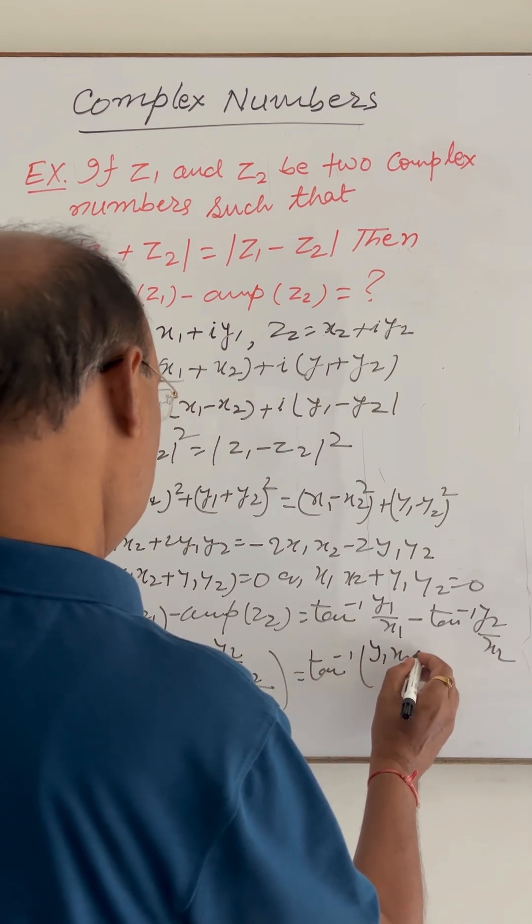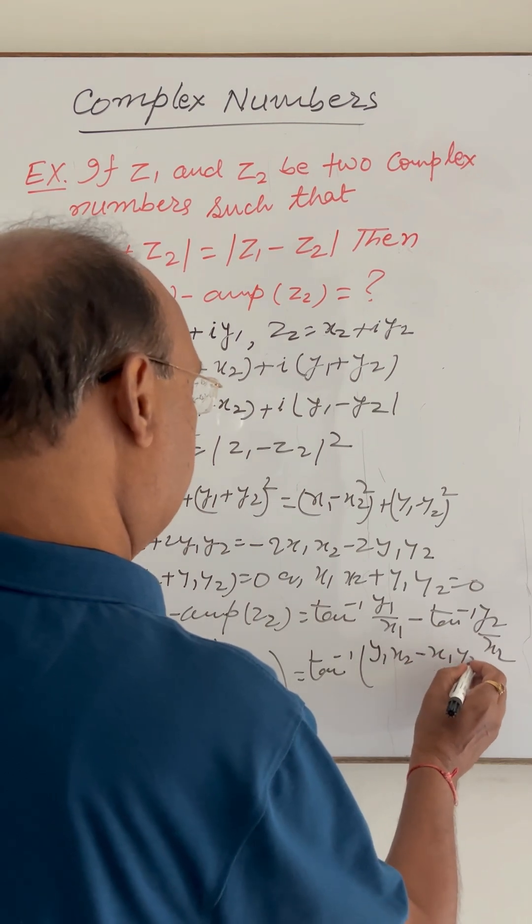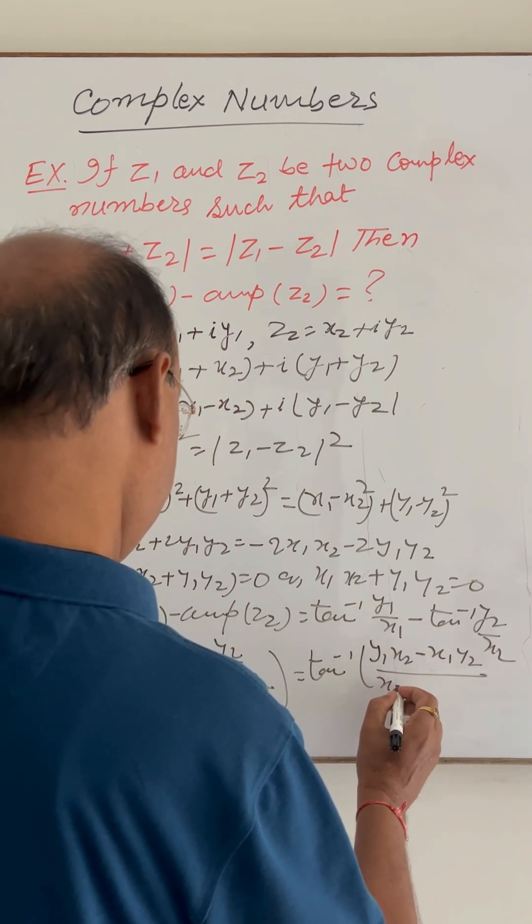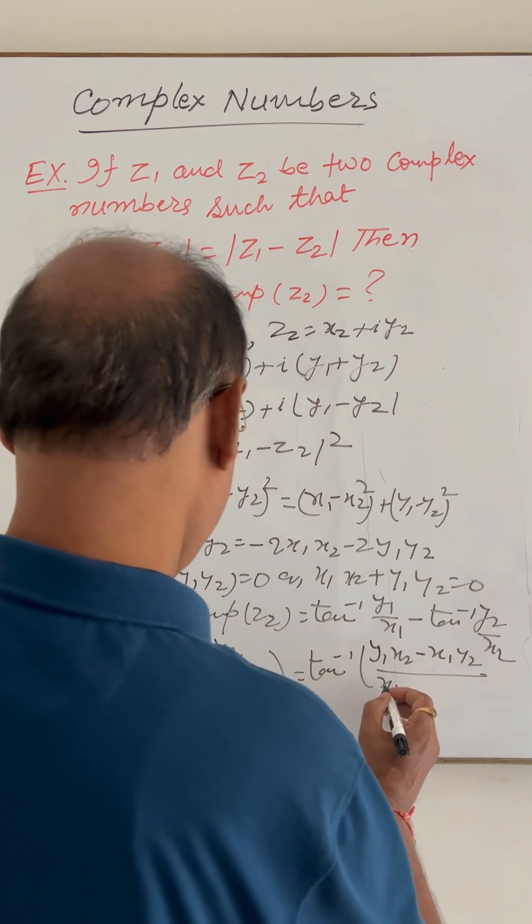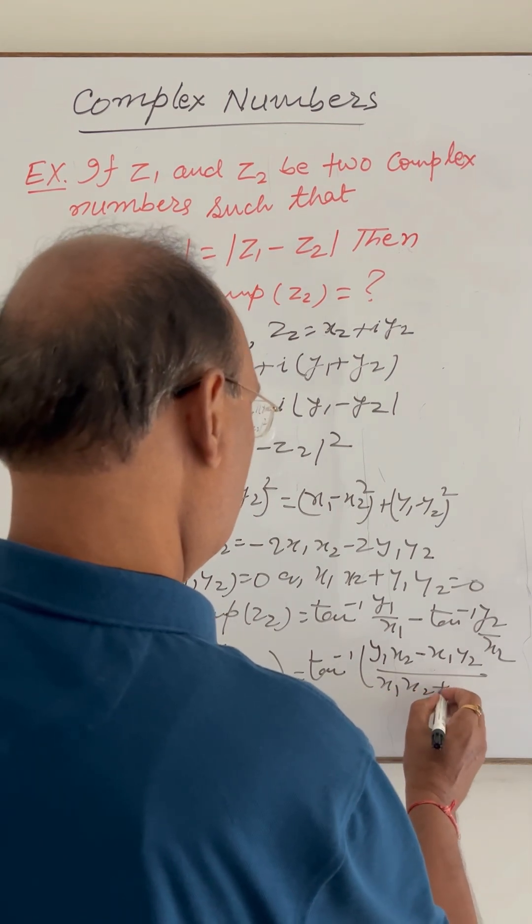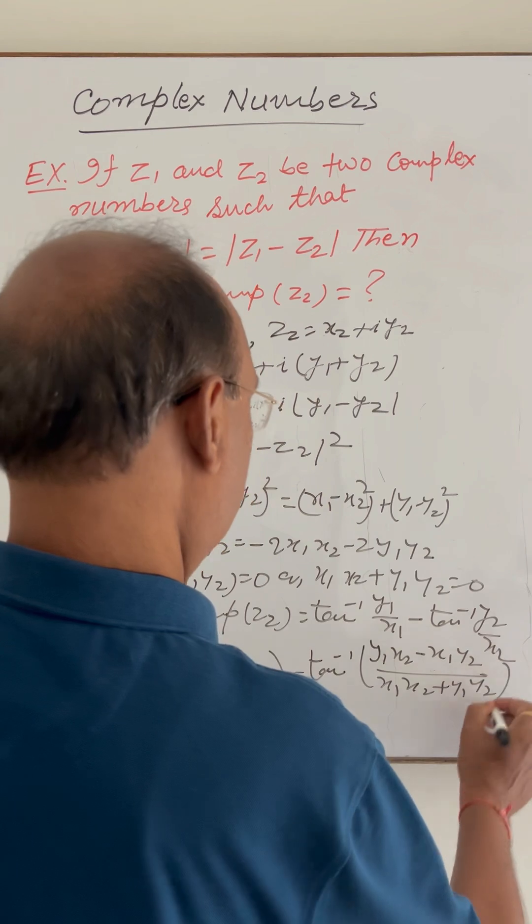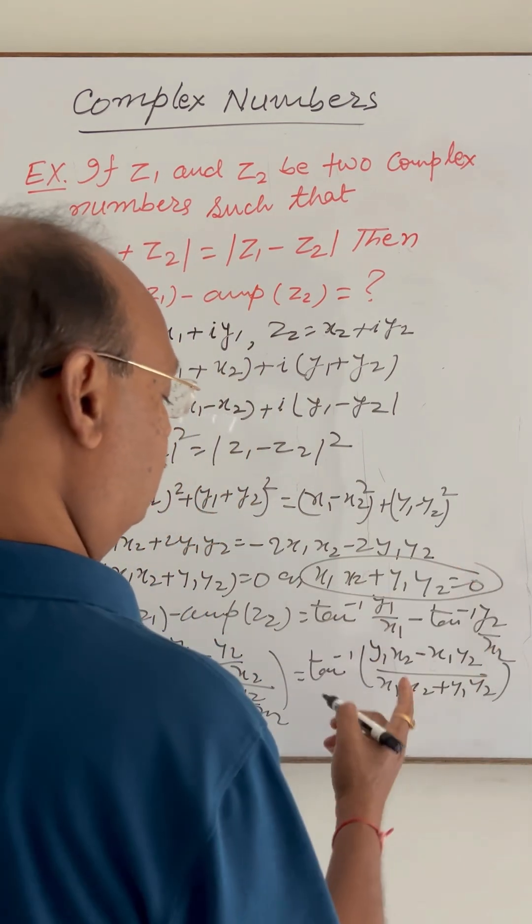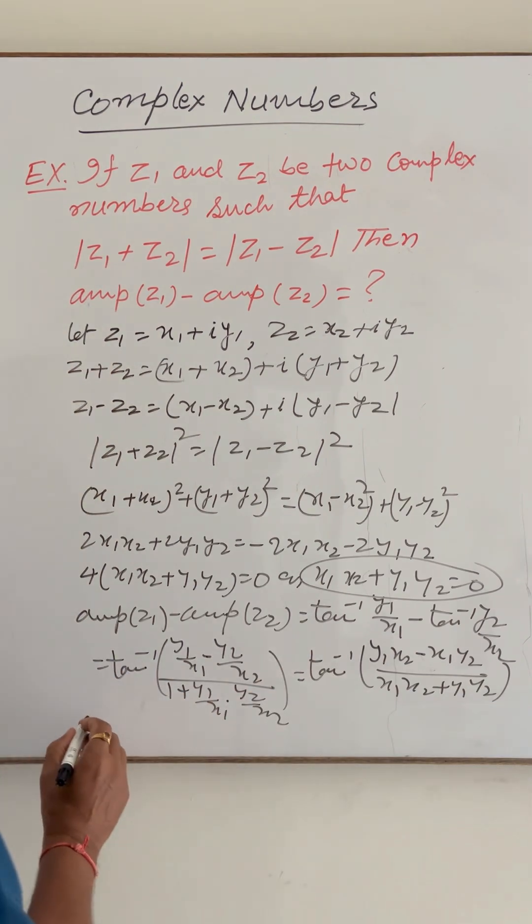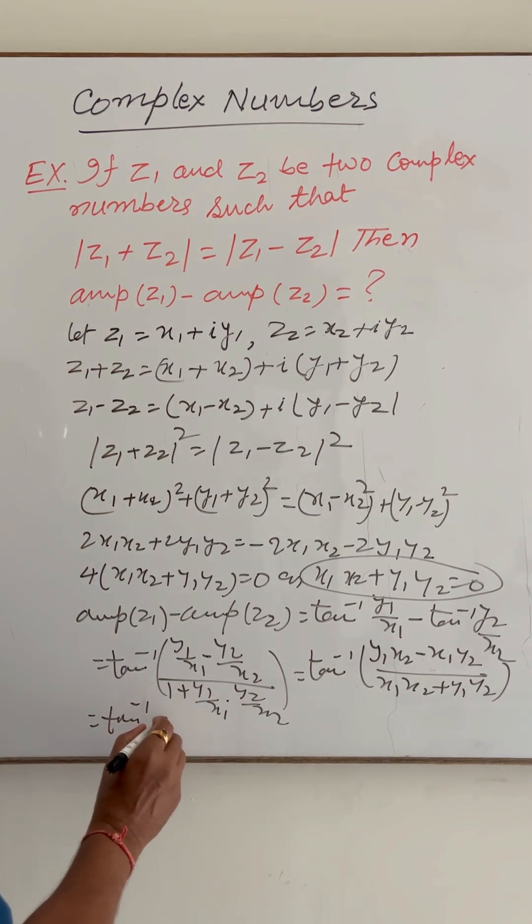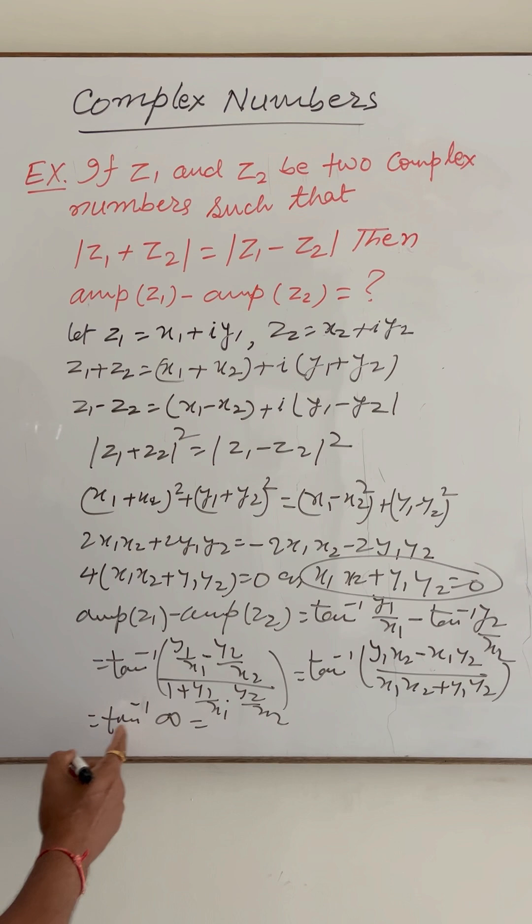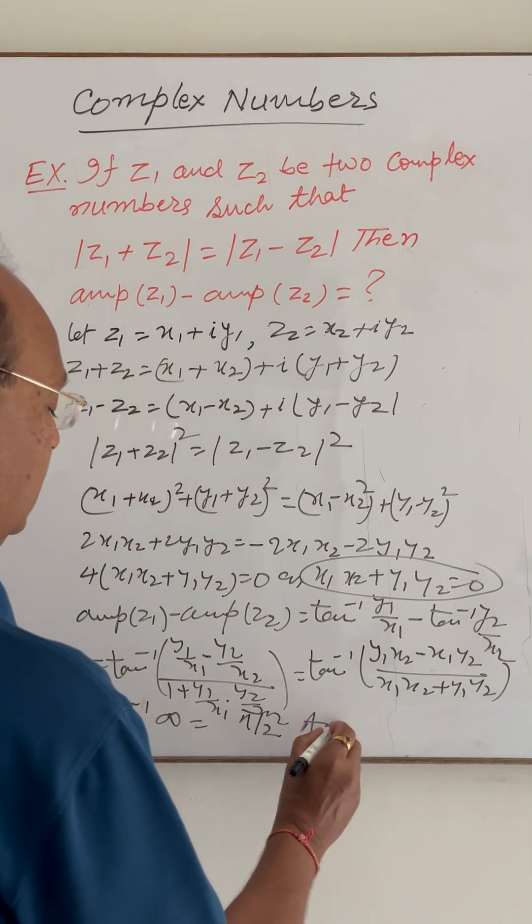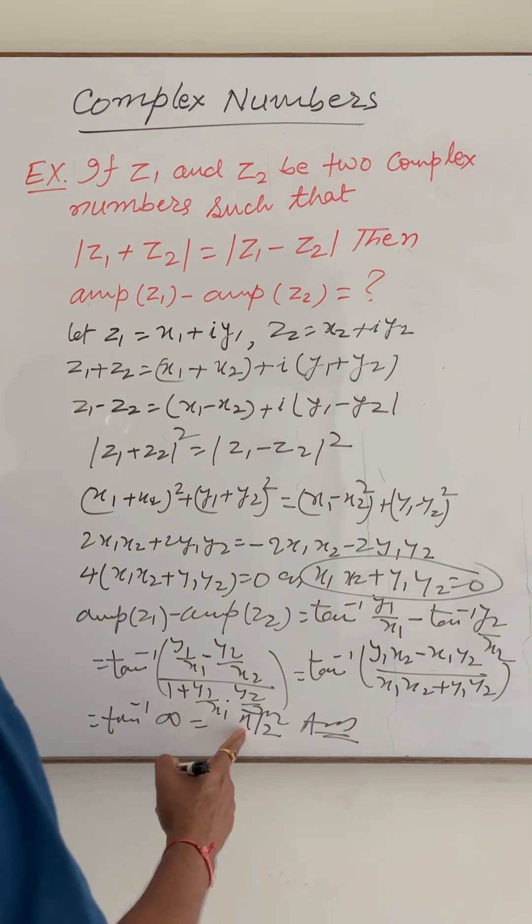Here, x1*x2 + y1*y2 equals 0, so something by 0 is infinity. So finally we are getting tan inverse of infinity, and tan inverse of infinity is π by 2. So this is the answer: π by 2.